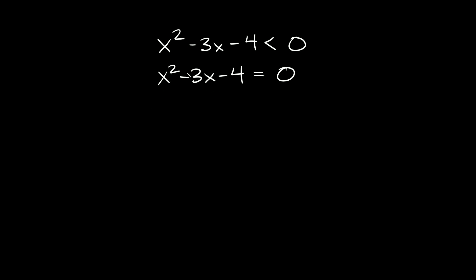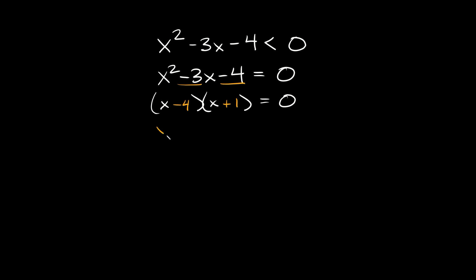We can factor this. x squared breaks into x times x, and we need two numbers that add up to negative 3 but multiply to negative 4. In this case we can plug in negative 4 and positive 1. So we have two factors: x minus 4 and x plus 1. Our two solutions are x is equal to positive 4 and x is equal to negative 1.